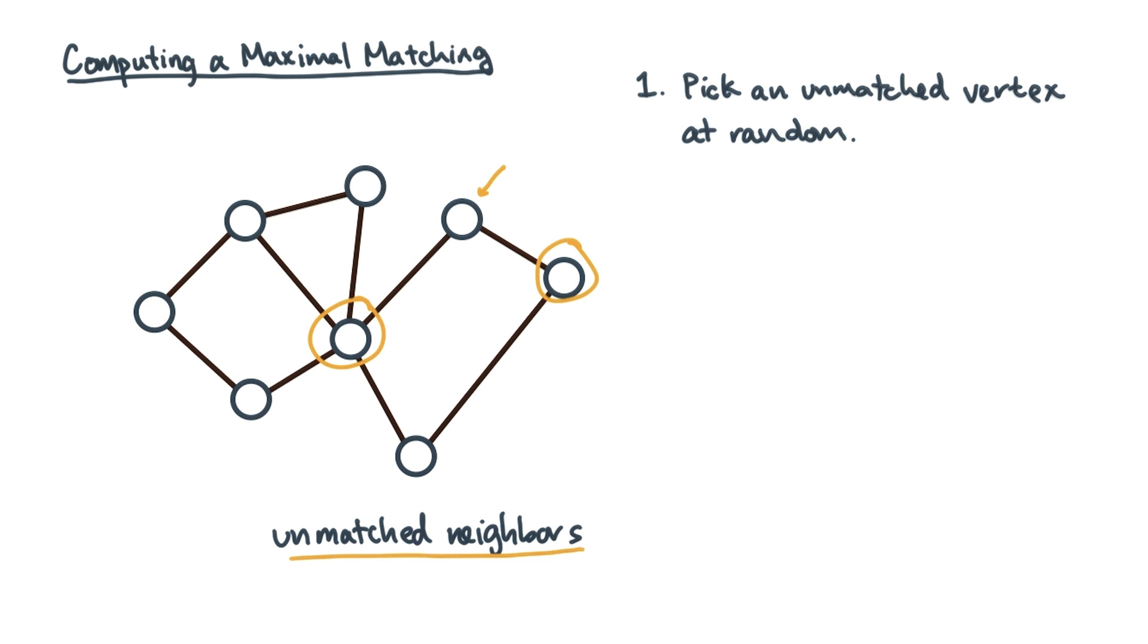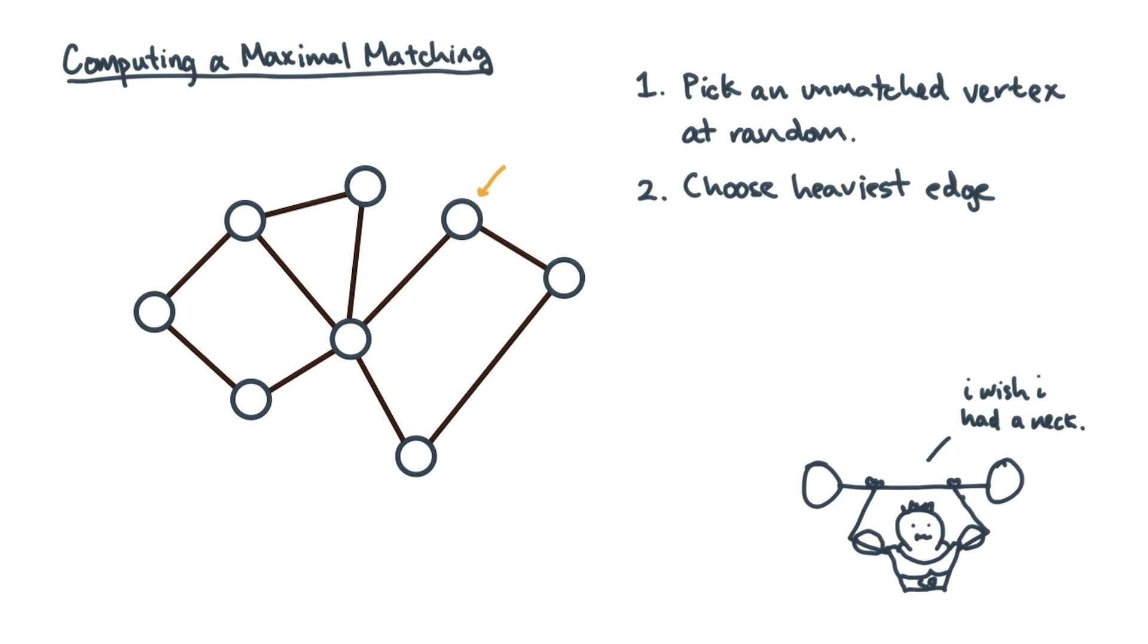A different approach is something called a heavy edge matching strategy. The idea is to look at the unmatched edge with the highest weight and then choose it.